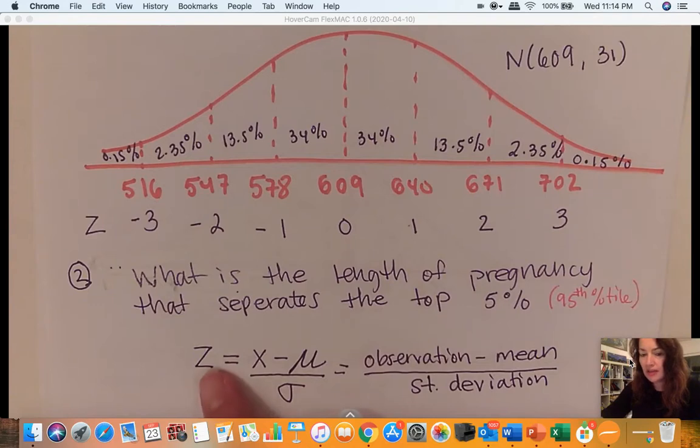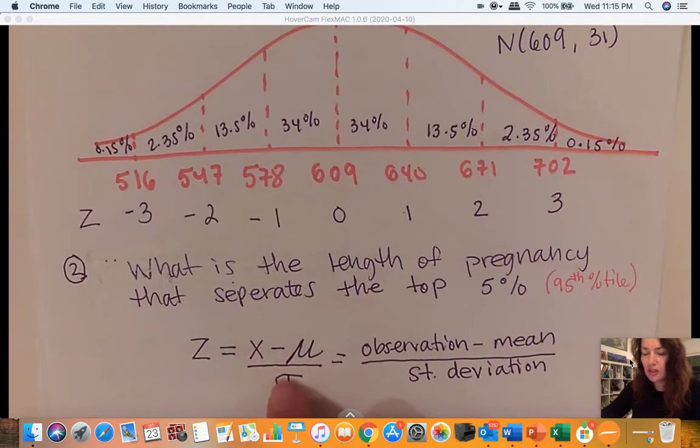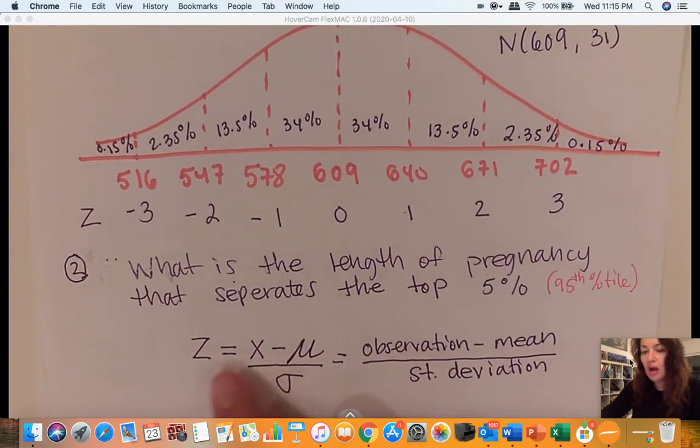Recall that anytime you're given a z-score formula, you can have any one of these items missing and all you need is one unknown to calculate it. For example, you can be given a z-score and asked to find the mean, or you could be given the observation and standard deviation. As long as you know three out of these four items, you can use this formula.